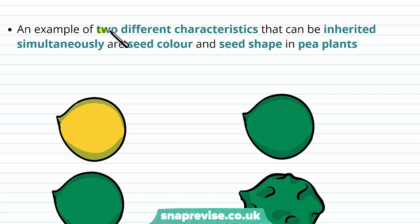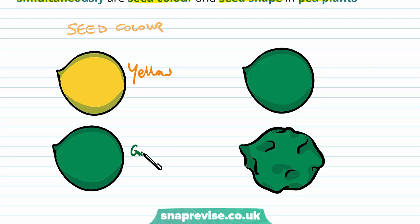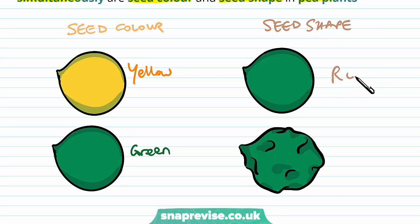An example of two different characteristics which can be inherited simultaneously are seed colour and seed shape in pea plants. The seed colour can either be yellow or green, and the seed shape, encoded by a different gene on a different chromosome, can be either round or wrinkled.